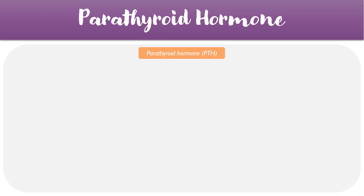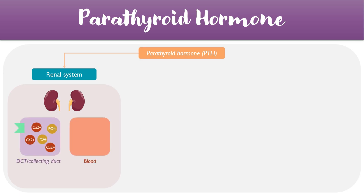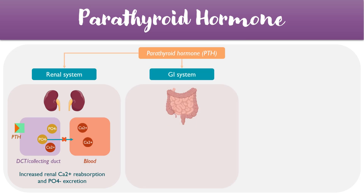Parathyroid hormone acts upon different systems in the body to achieve its effects on calcium and phosphate. The first system it acts upon is the kidneys. PTH binds to its receptors in the distal convoluted tubule or the collecting ducts, which increases the movement of calcium back into the blood. At the same time, PTH restricts the movement of phosphate back into the blood, decreasing phosphate reabsorption. The overall effect is increased renal calcium reabsorption and increased phosphate excretion into the urine.